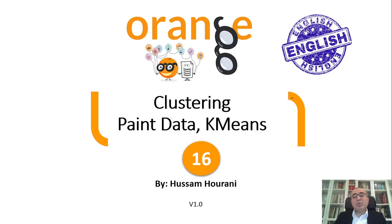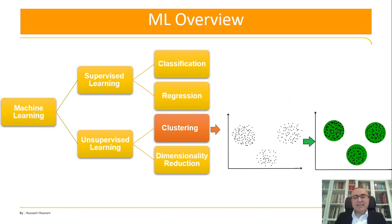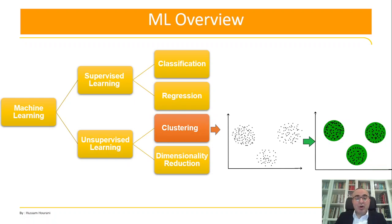Hello, this is Ossam Hourani and today we will talk about clustering. We will see how to paint data and how to use k-means to cluster the data. Before I give you the example, let's recap the machine learning algorithms. Previously we talked about supervised learning, which is classification and regression, and we said that supervised learning deals with labeled data. Today we will start with unsupervised learning, which is data with no labels, no targets, no output.